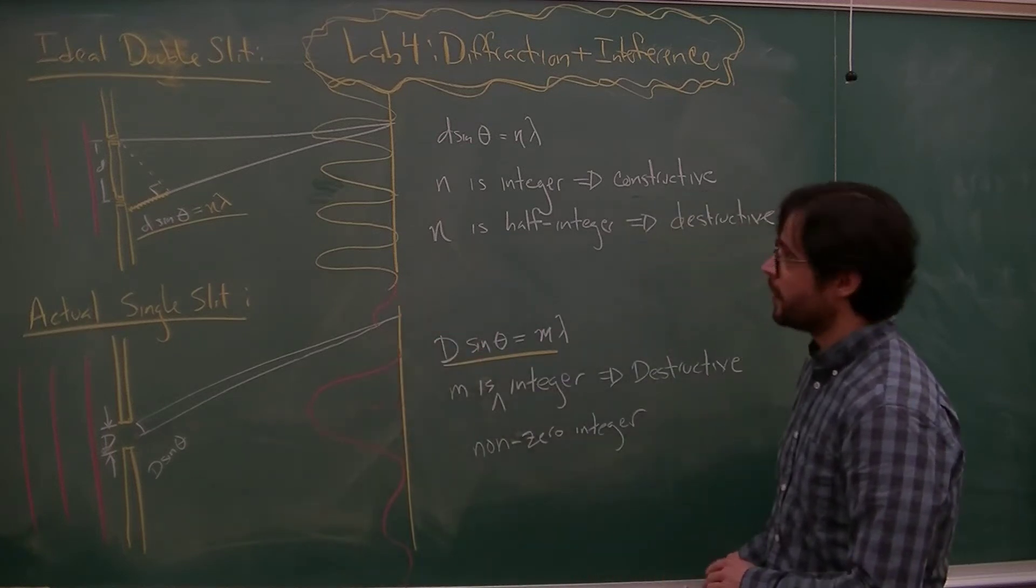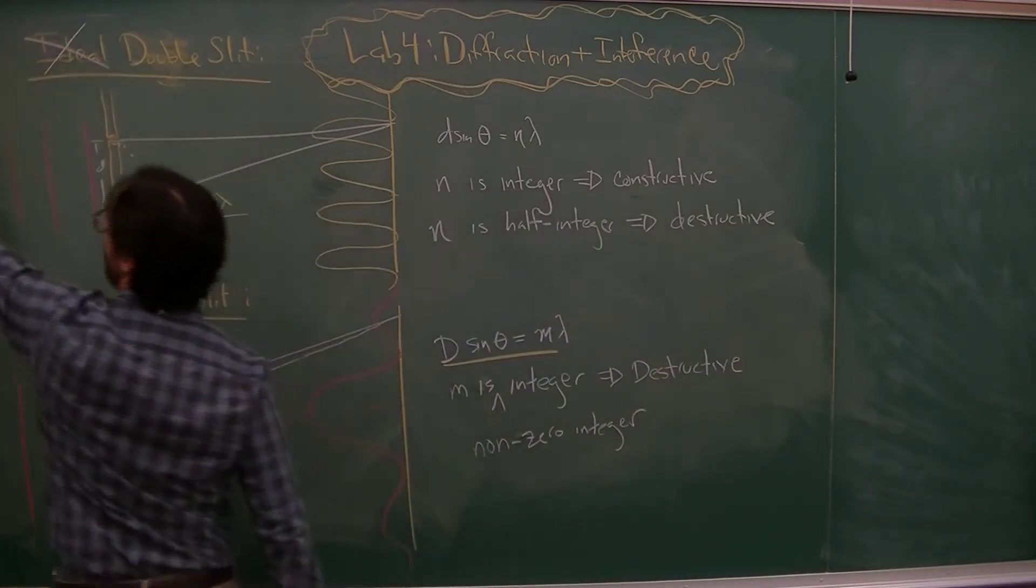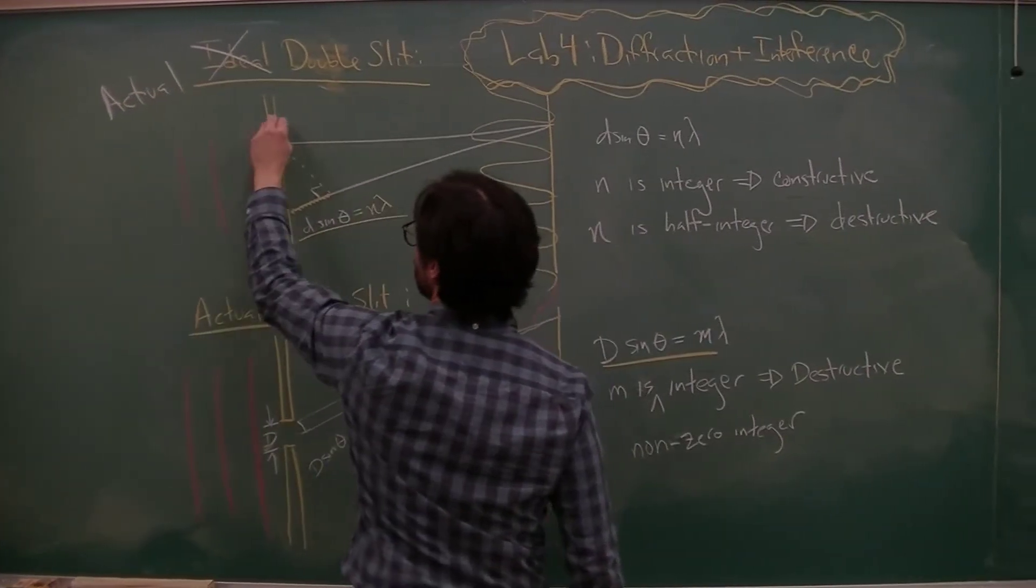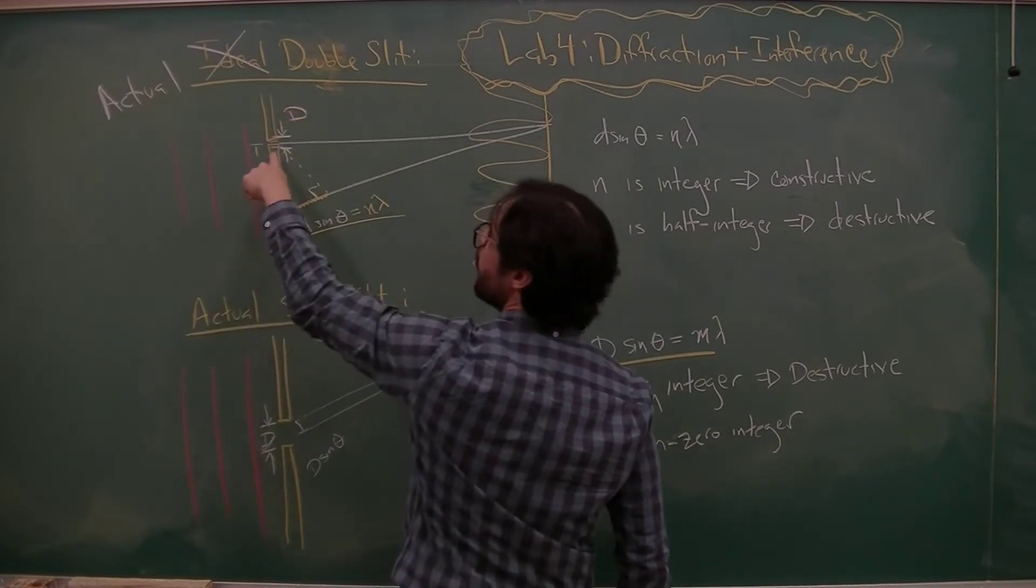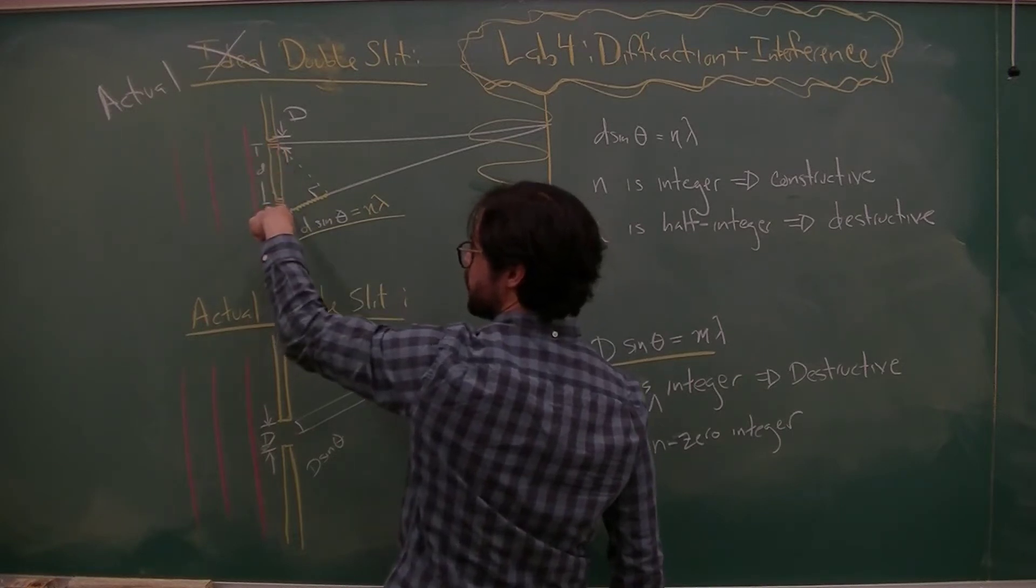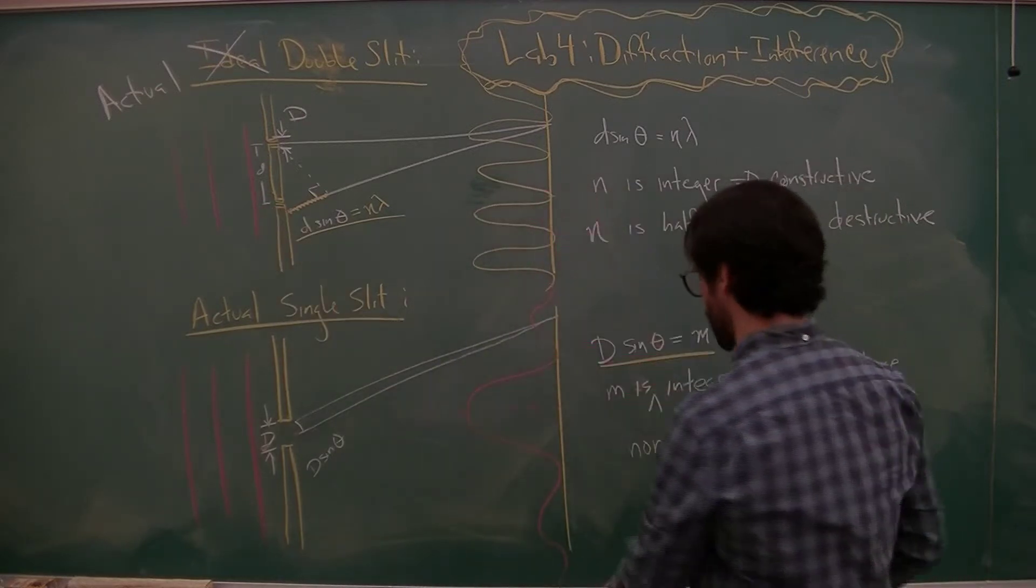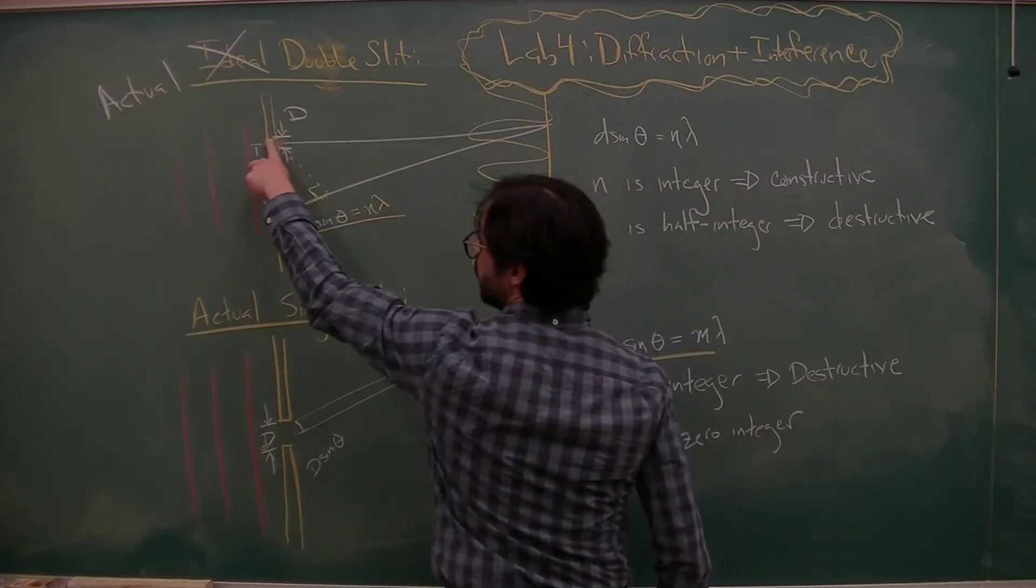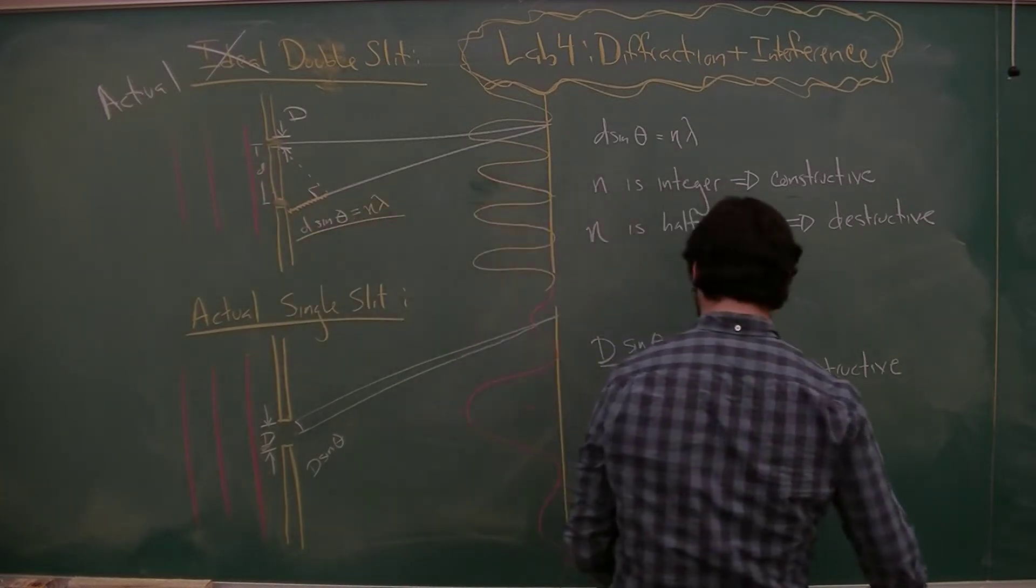Okay, so what happens when we look at, because we don't have access to infinitely thin things, what happens if you look at an actual double slit, and these things have, I did not come up with this notation, blame your textbook, slit width of d, capital D, and slit distance, distance from slit to slit of little d. So the good news is, I can just use this to modify that pattern, and what'll happen is I'll get diffraction because the slits are of non-zero size, and then I'll also get two slit interference.